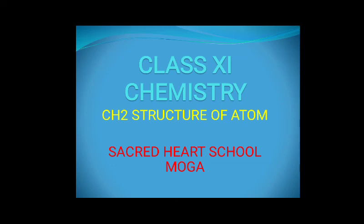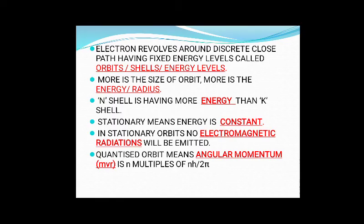Hello students, welcome. We were studying about the structure of an atom. Let us revise the first postulates of Bohr's atomic model. It states that electrons revolve around the nucleus in closed paths having fixed energy levels, called orbits or shells or energy levels. The second postulate states that more is the size of the orbit, more is the energy.